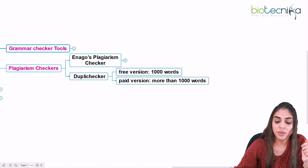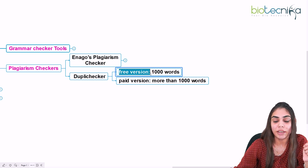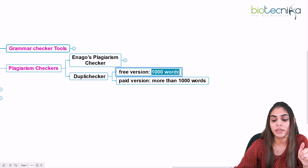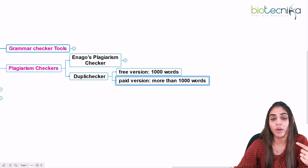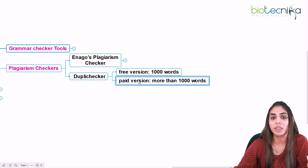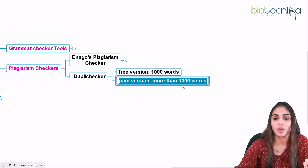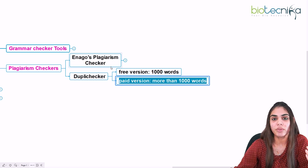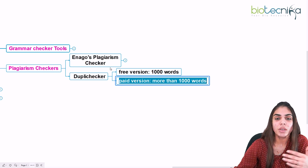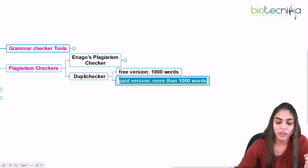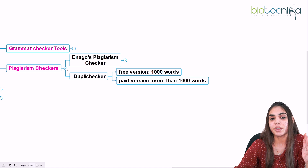With Dupli Checker, you can use a free version, but it has a limitation — you can only check up to one thousand words. If you want to check more than that, as you would for a full paper, you need to purchase the paid version, which removes the word limit. It is better to go for a free plagiarism checker, as you will find many different types available online.